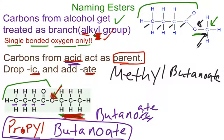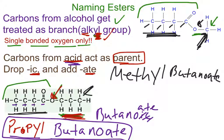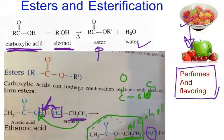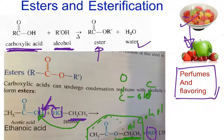So whatever this carbon group is, treat it as an alkyl group. Whatever the rest is, treat it as the original acid — drop the -IC, add -ATE, and you're done. As always, hard work plus sacrifice equals success. I hope this video was a help. Esterification is a nice and very important reaction in industry. Don't get confused by the different structures, and take care.